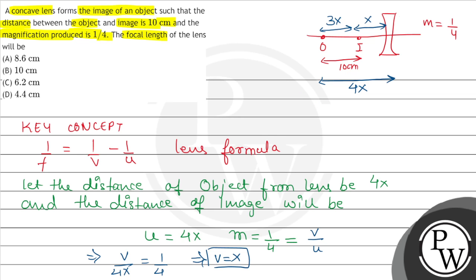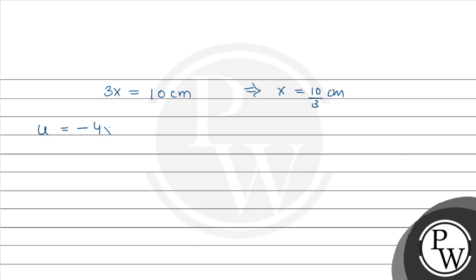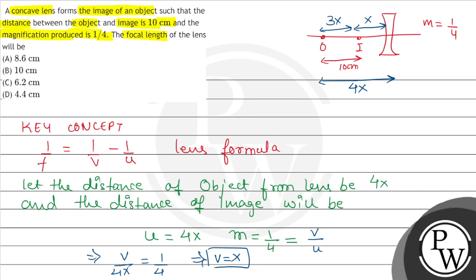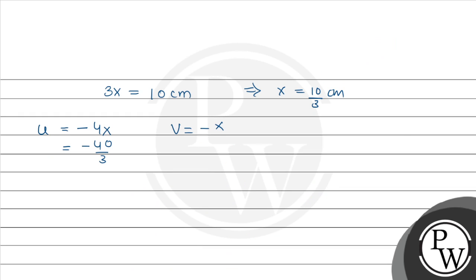With sign convention, both object and image are on the left side of our lens. So u will be minus 4x = minus 40/3 cm, and v will be minus x = minus 10/3 cm. Now we substitute these values into the lens formula.